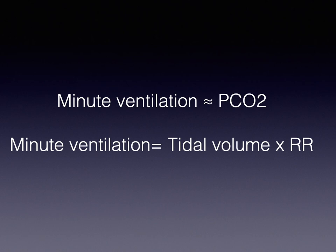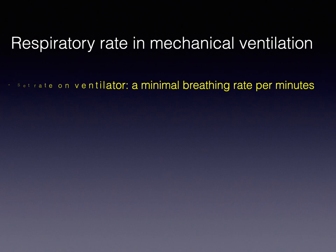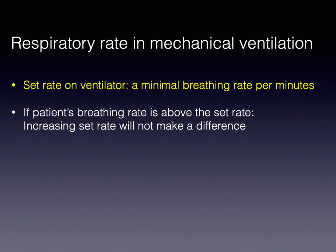PCO2 is directly proportional to dead space and your effective minute ventilation. Minute ventilation is tidal volume times respiratory rate. You can adjust either tidal volume or respiratory rate to titrate and optimize PCO2. The set respiratory rate on the ventilator is a minimum breathing rate per minute — if you set 10, the machine ensures at least 10 breaths per minute. It does not restrict the maximum. So if the patient is already breathing at 20, increasing the set rate from 12 to 18 won't make a difference.